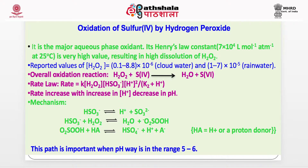The mechanism involves: HSO3⁻ reacting with H2O2 to form a peroxidic intermediate, which then reacts with a proton donor HA to produce H⁺ and sulfate. This pathway is important when pH is in the range 5 to 6 — i.e., when the pH of the rainwater is low.